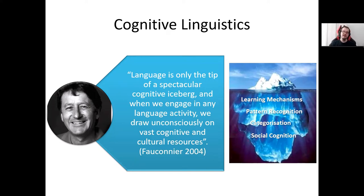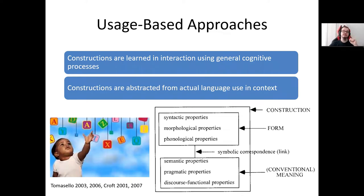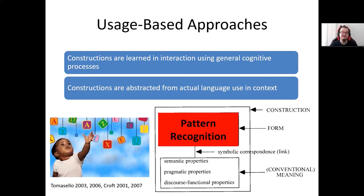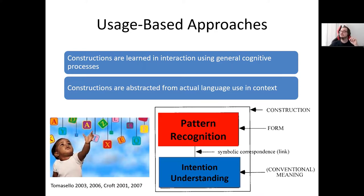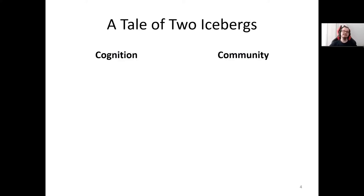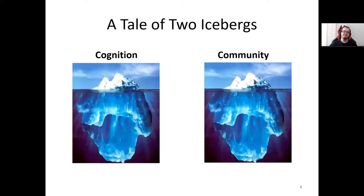From a usage-based perspective, one of the main assumptions is that constructions are learned in interaction using general cognitive processes, and that constructions are abstracted from actual language use in context. For language acquisition, if we have a construction as a form-meaning pairing, children use their pattern recognition skills to get into the form side and their intentional understanding skills to get to the meaning side. Context is important here, and the usage-based approach takes seriously that language acquisition and language use take place in the community. So we're interested in two different kinds of icebergs: the iceberg of community and the iceberg of cognition.